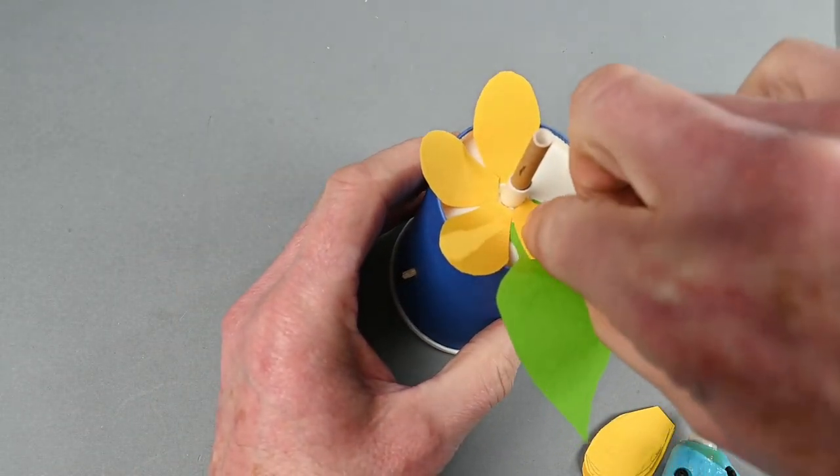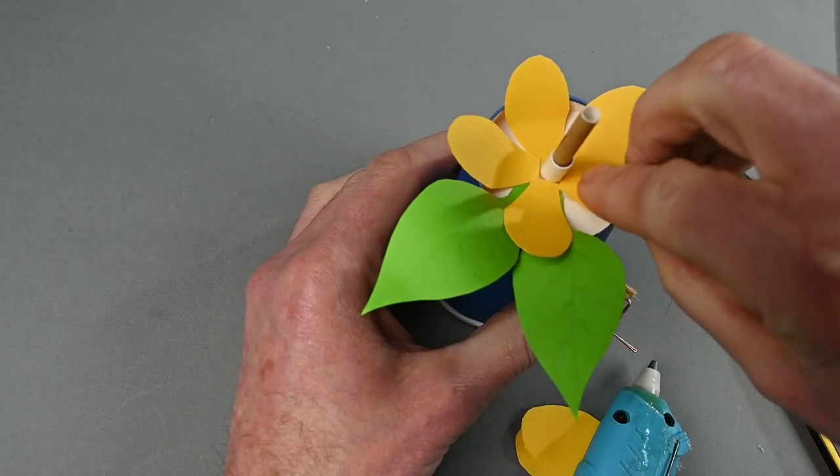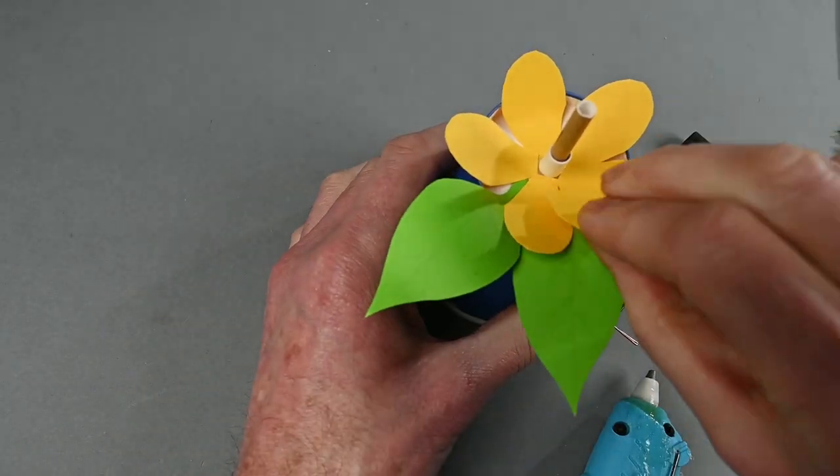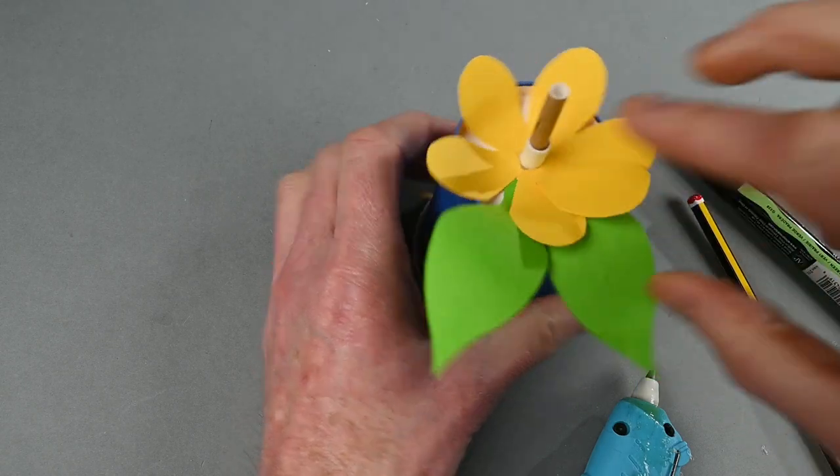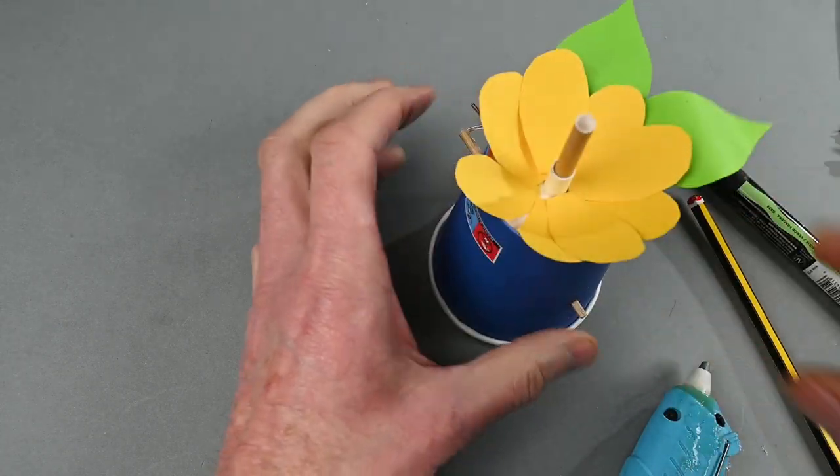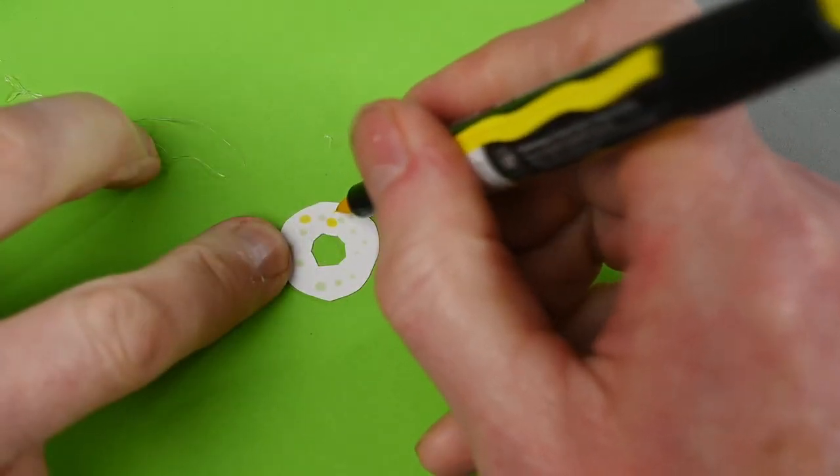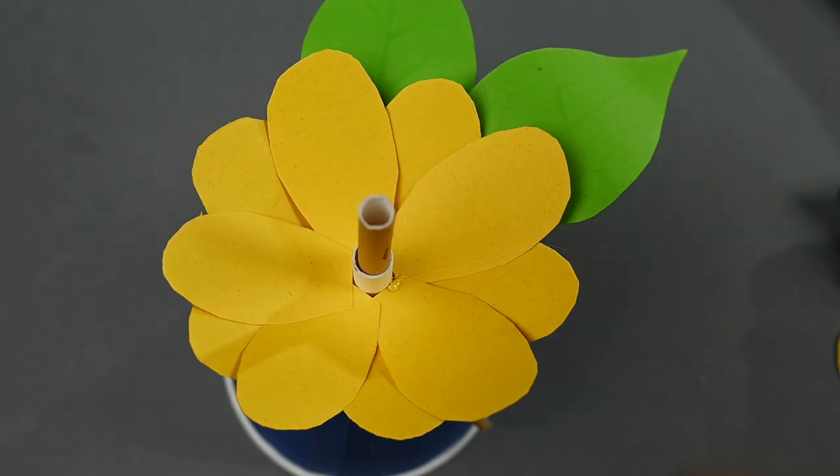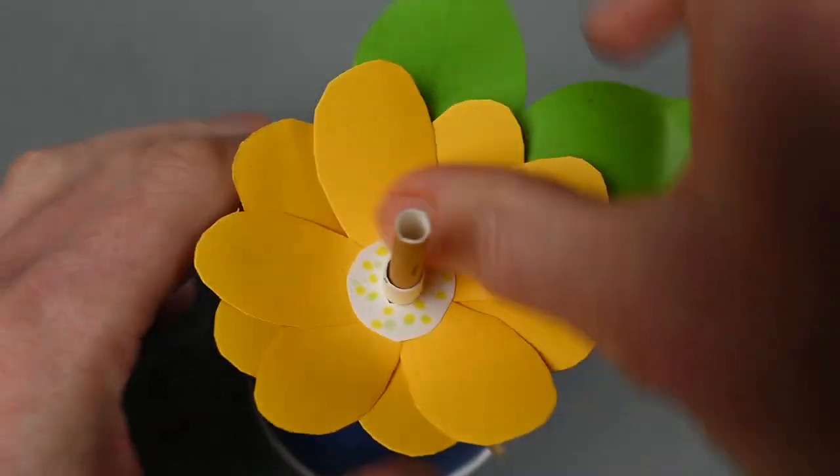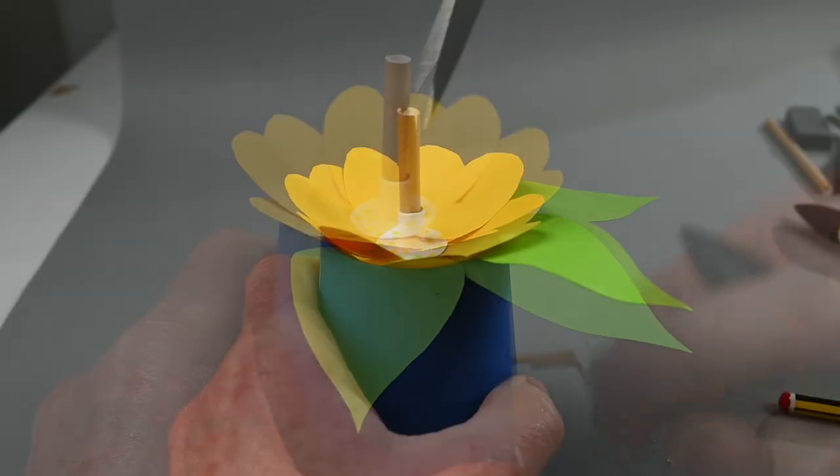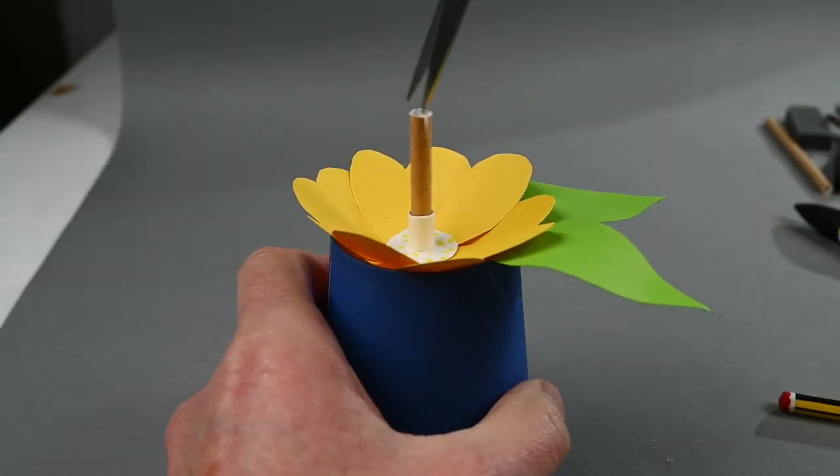That's the first five petals, and then another layer sort of in between those two. Then I made a central piece for the flower, which I've cut a hole in that's just a little bit larger than the paper straw. I glued that into place, and then the flower's complete and you can see that the whole thing's working.